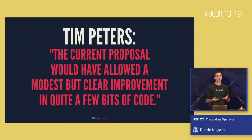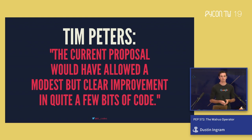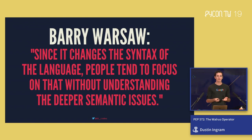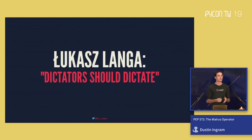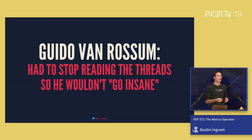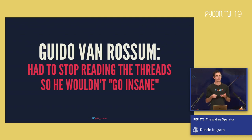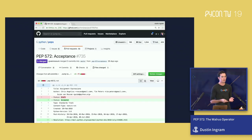Tim Peters said the proposal would allow a modest but clear improvement in a few lines of code. Barry Warsaw noted that since it changes syntax, people focus on that without understanding the deeper semantic issues. Ugarsh Langa said dictators should dictate — Guido should just do whatever he wanted. And Guido himself said he had to stop reading the threads so he wouldn't go insane. Eventually, after all this discussion, Guido went to the PEPs repo and changed PEP 572 from draft to accepted.